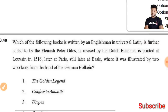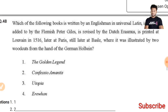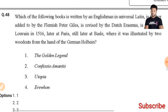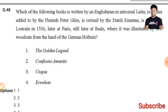Question 48: Which of the following books is written by an Englishman in universal Latin? The work that appeared in 1516 is 'Utopia' by Thomas More.